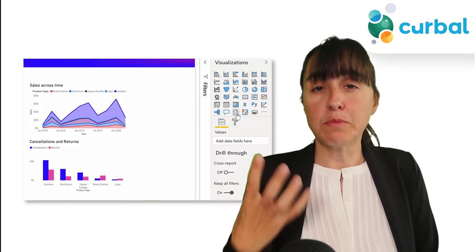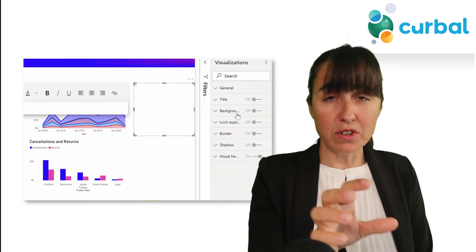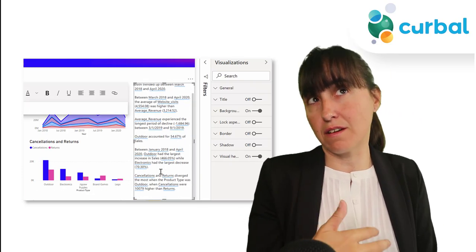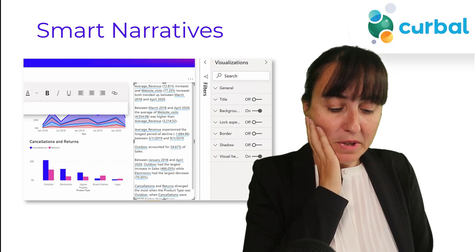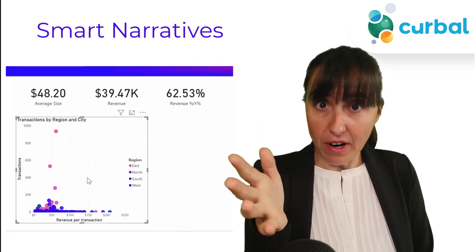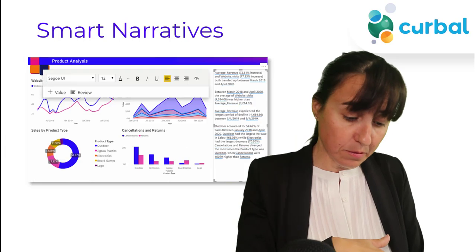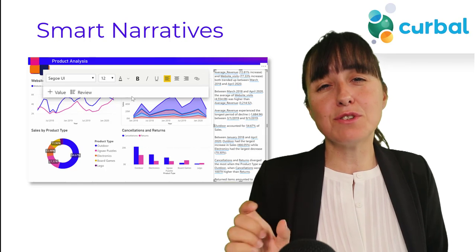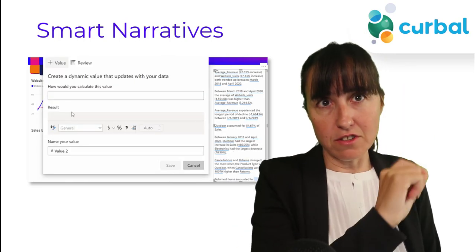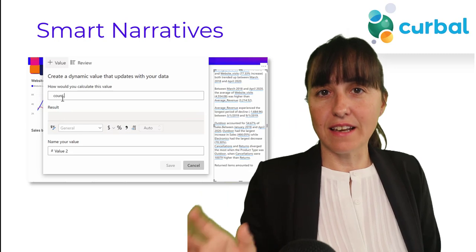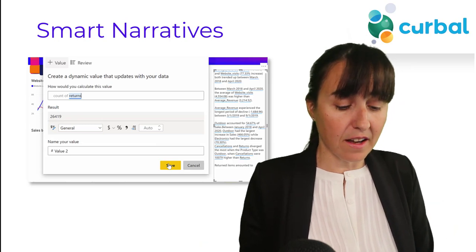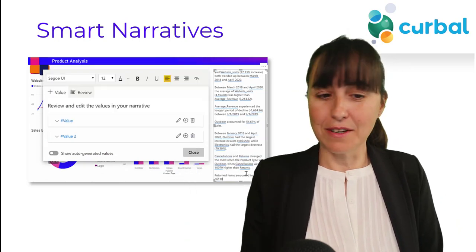The next update is Smart Narratives. Smart Narratives is basically a text box that you drop into your canvas and it will read the information on the canvas and create text from the visualizations. You will be able to summarize the text if you think there is too much, you will be able to customize it, and the text box is sensitive to cross-filtering - so if you pick something from another chart, the text in the box will update accordingly.